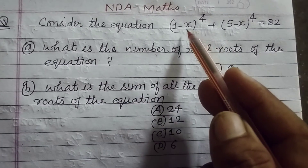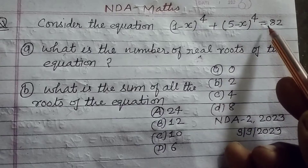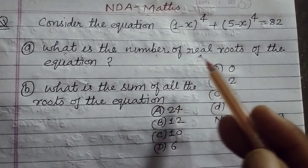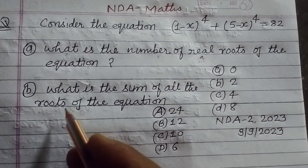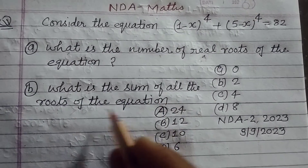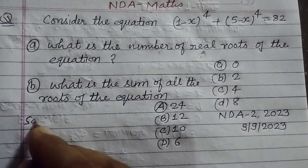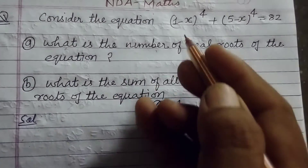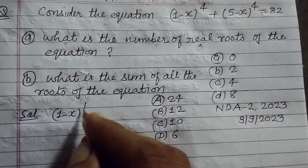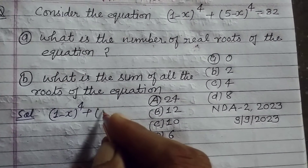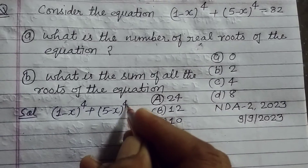Consider the equation: (1 minus x) to the power 4 plus (5 minus x) to the power 4 equal to 82. What is the number of real roots of the equation? And what is the sum of all the roots of the equation? Two questions are based on this equation.